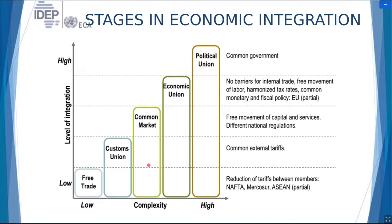A common market goes a step further. It involves the formation of a customs union plus policies and agreements made to promote the free movement of capital, services, as well as people. In an economic union, the countries party to the agreement agree on macroeconomic convergence — a common set of macroeconomic policies, both fiscal and monetary.